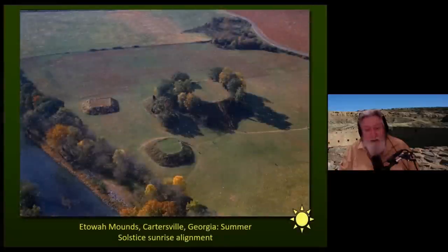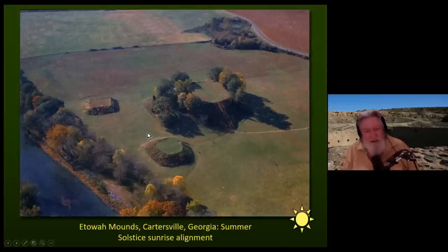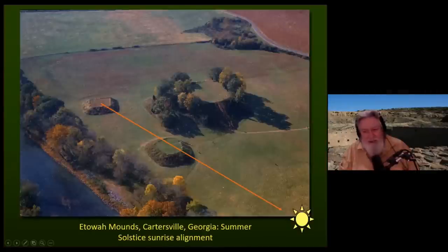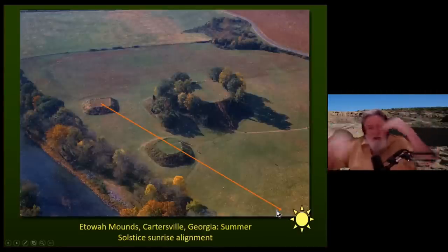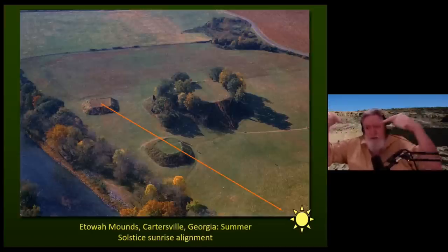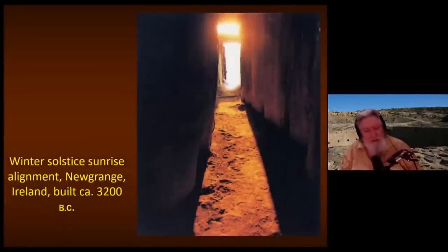Here's a photograph looking along the axis defining that alignment. Then here are the Etowah Mounds in Cartersville, Georgia, with a summer solstice sunrise alignment defined by Mound A, Mound B, and Mound C. About 25 years ago when I first visited, there was still a visible depression in the center of the mound which probably held some kind of foresight pole. When you projected that line to the northeast, there were two hills creating a V shape, and you would see the sun rising between those two hills on summer solstice.